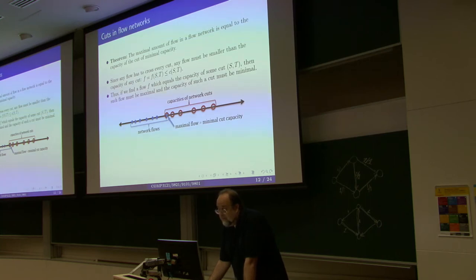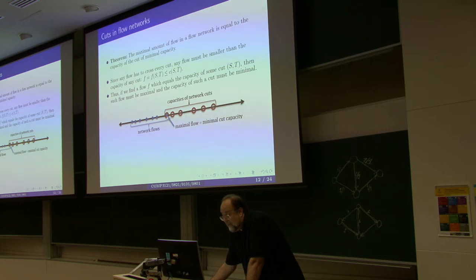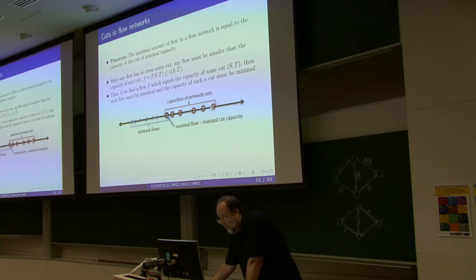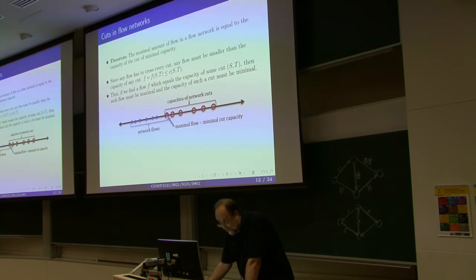If this flow equals the capacity of this cut, and this flow is less than or equal to the capacity of any cut, then because the capacity of this particular cut equals that flow, this cut must be smaller or equal to any other cut — simply because it equals a flow, and any flow bounds from below any cut. In the other direction, this flow must be maximal because every flow is smaller than the capacity of any cut, including this very cut. But the capacity of this cut equals this flow, so clearly this flow bounds from above every other flow.